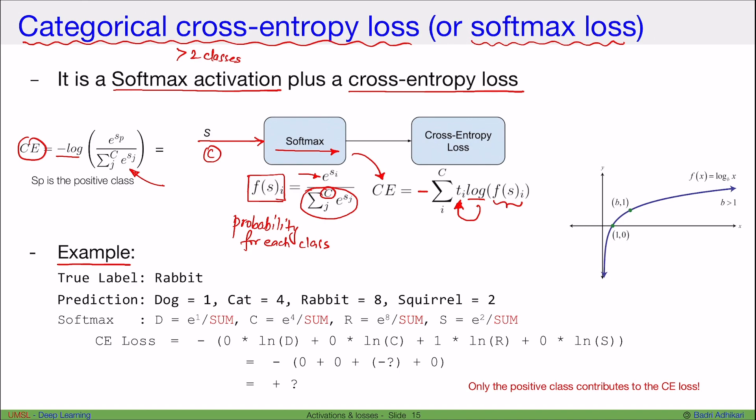Say that we have a neural network model that has four output nodes: 1, 2, 3, and 4. Say the first output node represents the probability for dog, the second, the probability for cat, the third, the probability for rabbit, and fourth, the probability for squirrel.